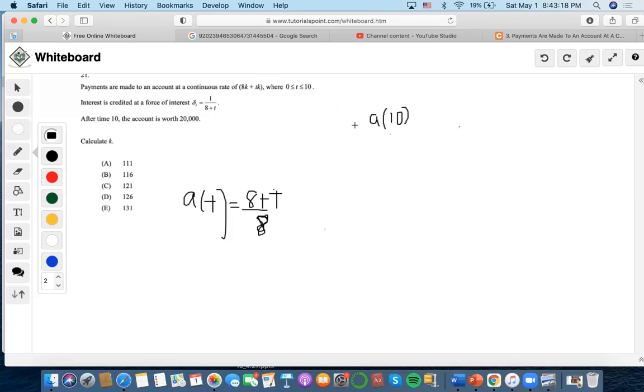We need to set up the accumulation factor, which occurs when we get the time later of 10 over what was occurring in the beginning. Now if we input 10 here, we would get 18/8 over (8+t)/8. We could get rid of the eights here, and we're left with 18/(8+t).